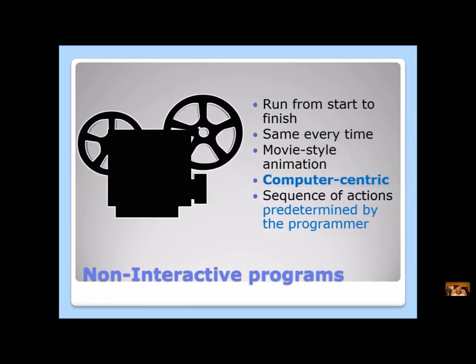All the programs that we've been doing so far in ALICE have been non-interactive programs. They've been running the same from start to finish. Every time you click the run button, the program is the same. This is what we call movie-style animation, because when you watch a movie, it's the same every time. We call this computer-centric because the sequence of actions is predetermined by the programmer.